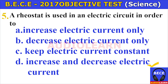Number five. A rheostat is used in an electric circuit in order to A. Increase electric current only, B. Decrease electric current only, C. Keep electric current constant, D. Increase and decrease electric current. The answer is D. Increase and decrease electric current. A rheostat is used in an electric circuit in order to increase and decrease electric current.